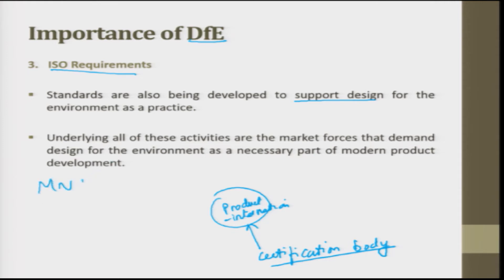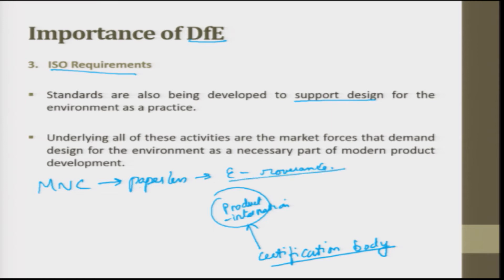Underlying all these activities are market forces that demand design for environment as a necessary part of modern product development. Today many multinational companies have gone for a paperless office — digital or e-governance — moving towards paperless operations, which has led to reduction of tree cutting. Retrieval and correction of data have also become faster and easier. This is now added as part of ISO: if any company wants an ISO certificate, their products should follow design for environment and move towards a paperless factory.